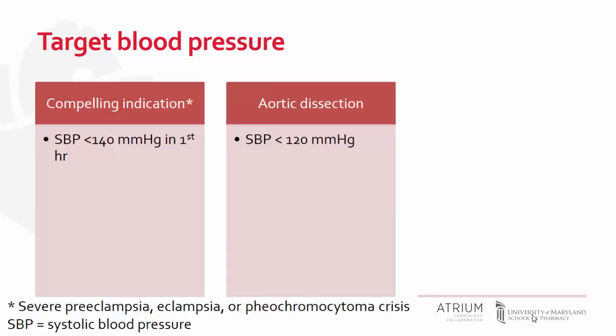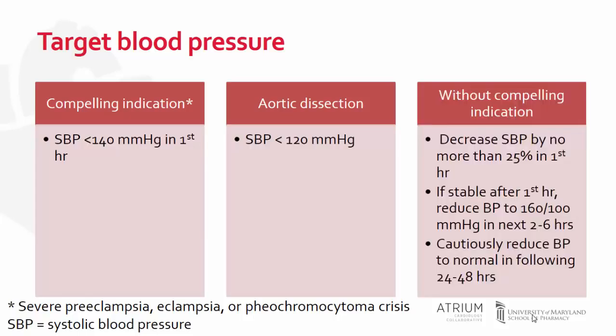In patients presenting with an acute aortic dissection, the systolic blood pressure should be rapidly reduced to less than 120 millimeters of mercury. In patients without a compelling indication, the goal is to decrease the systolic blood pressure by no more than 25 percent in the first hour.